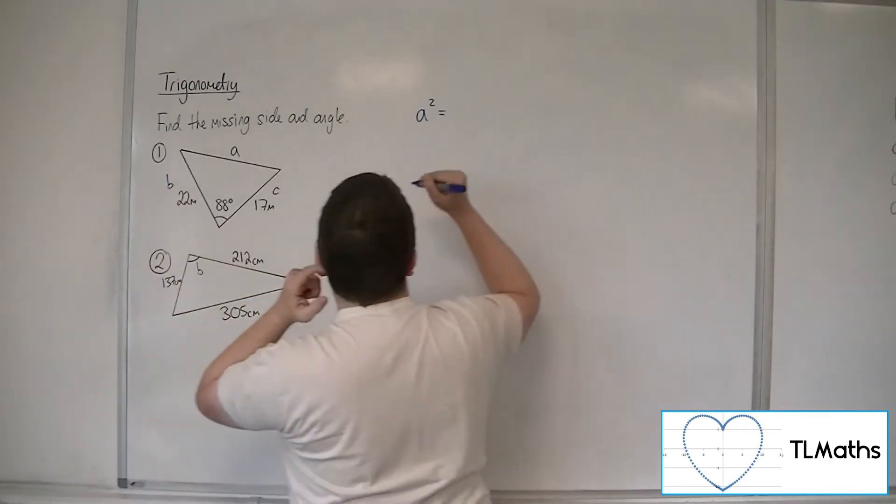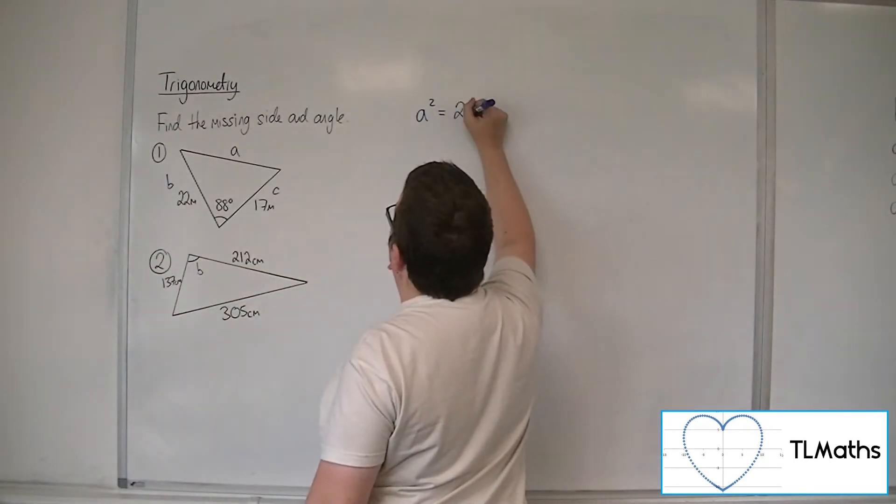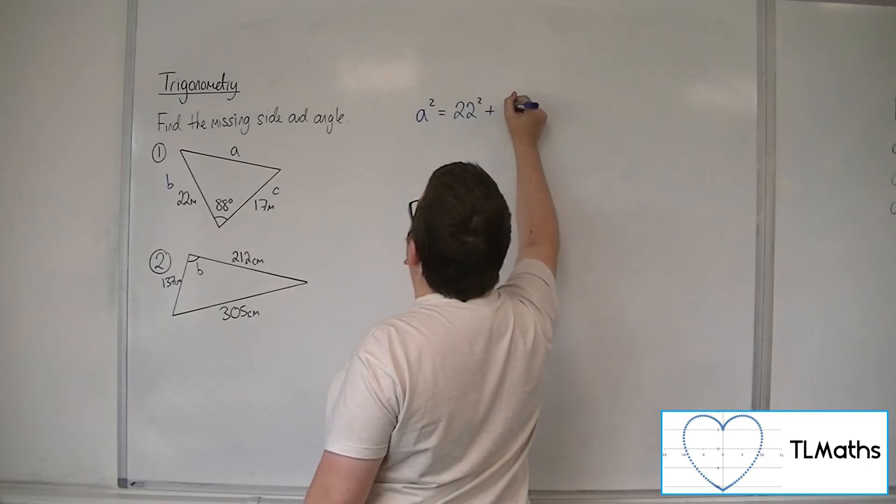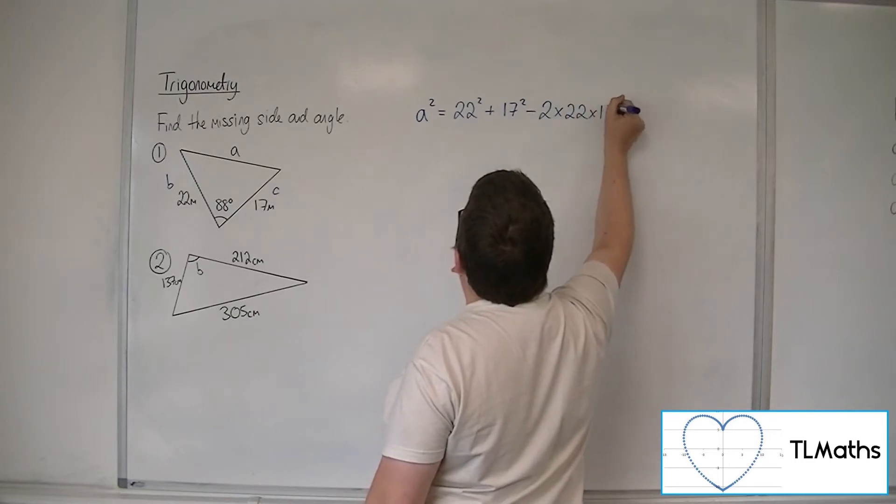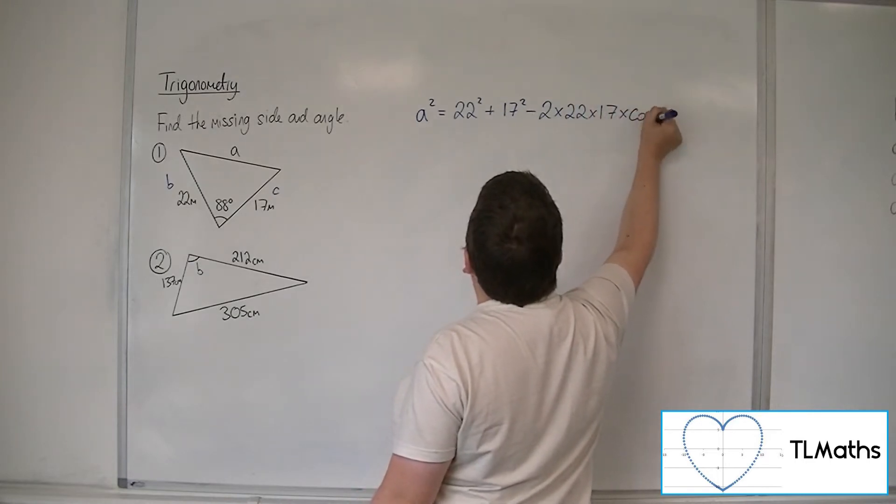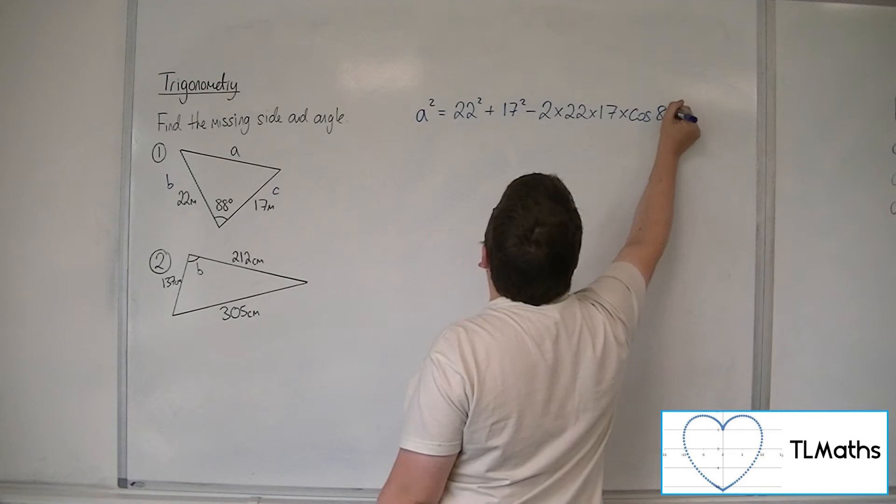Let's quickly label them. So we've got B squared, that's 22 squared, plus C squared, minus 2 times B times C times cos of the angle, 88 degrees.